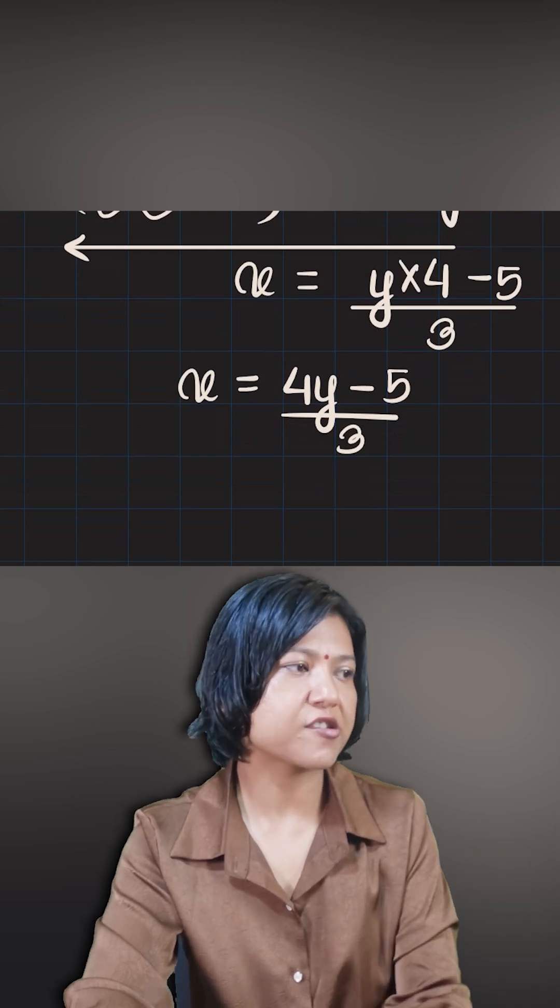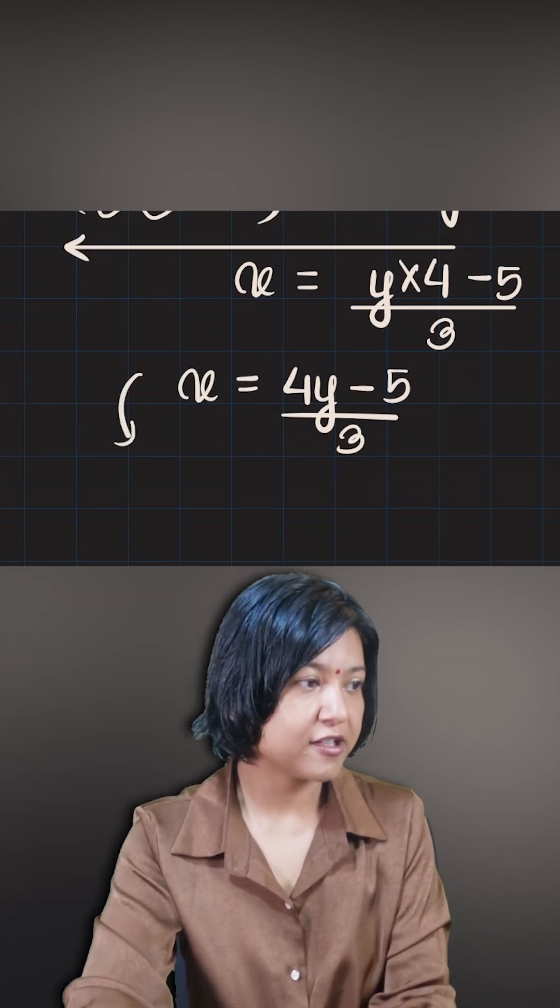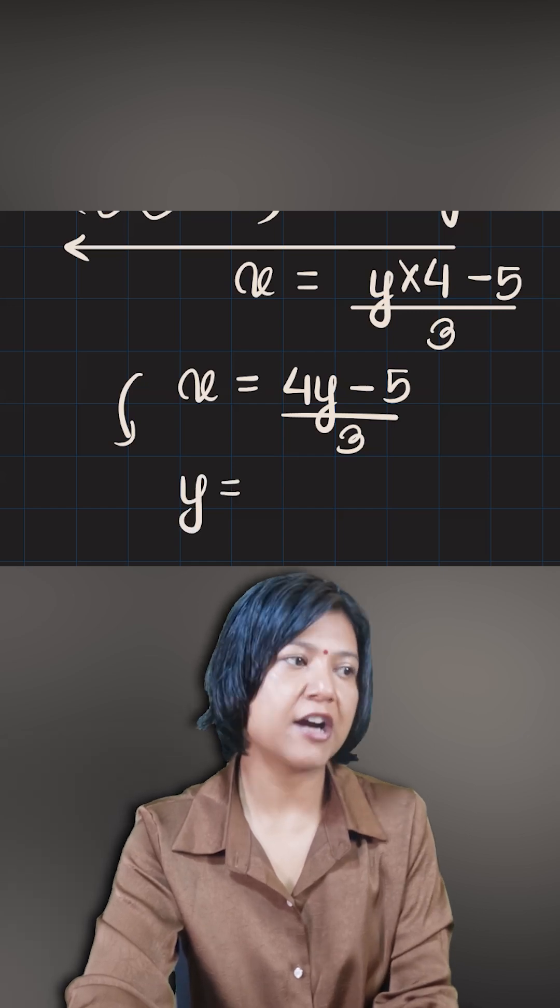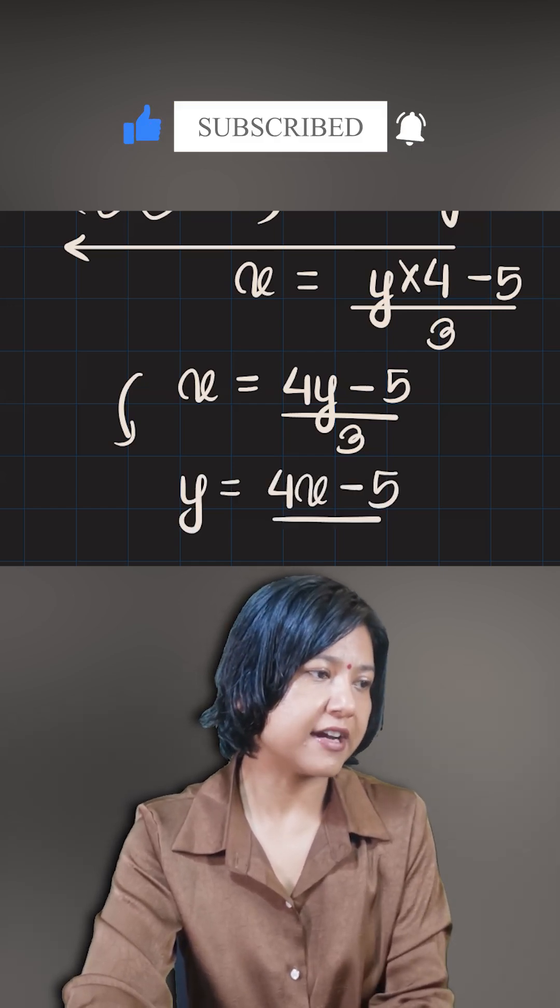So we just do one step: that is, we swap x and y instead of each other. So it will become the final output for this function is 4 times the input minus 5 divided by 3.